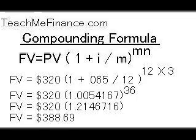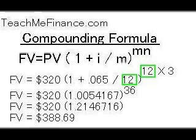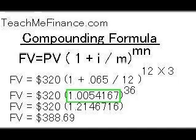Plug in the numbers for the first payment — it's $320, and it's for three years, so N is 3. It's compounded monthly, so M is 12. You figure this out: 0.065 divided by 12 equals 0.0054167, plus 1 equals 1.0054167.